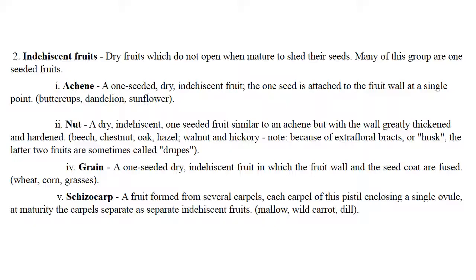The second kind is indehiscent fruit — dry fruits which do not open when mature to shed their seeds. They are grouped into achene: one-seeded, dry, indehiscent fruit where one seed is attached to the fruit wall at a single point, e.g. buttercups, dandelion, sunflower. Nut is a dry, indehiscent, one-seeded fruit similar to achene but with a wall greatly thickened and hardened, like hazel or oak.